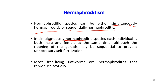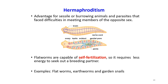Although the ripening of gonads may be sequential to prevent self-fertilization, most free-living flatworms are hermaphrodites that reproduce sexually. Being a hermaphrodite is advantageous especially for sessile or burrowing animals and parasites that face difficulties meeting members of the opposite sex. Flatworms have ovaries and are capable of self-fertilization, requiring less energy to seek a breeding partner. Other examples include earthworms and garden snails.